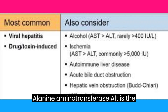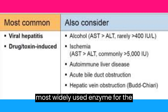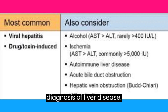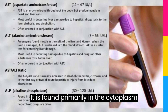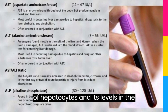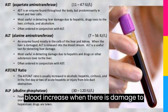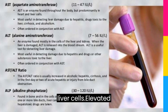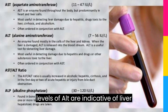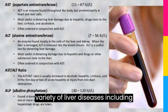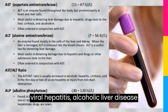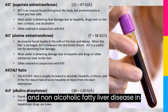Alanine aminotransferase (ALT) is the most widely used enzyme for the diagnosis of liver disease. It is found primarily in the cytoplasm of hepatocytes, and its levels in the blood increase when there is damage to liver cells. Elevated levels of ALT are indicative of liver injury, and they are used to diagnose a variety of liver diseases, including viral hepatitis, alcoholic liver disease, and non-alcoholic fatty liver disease (NAFLD).